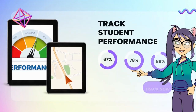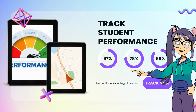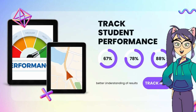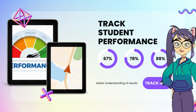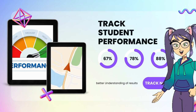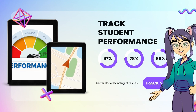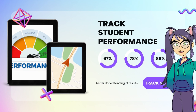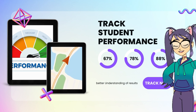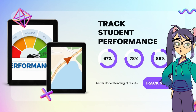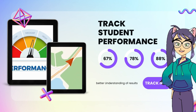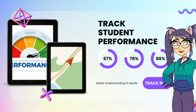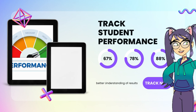Another method for evaluating the effectiveness of e-assessment and feedback is to track student performance. This can be done by looking at student grades, test scores, and other measures of academic achievement. By tracking student performance, it is possible to see how e-assessment and feedback are impacting student learning.